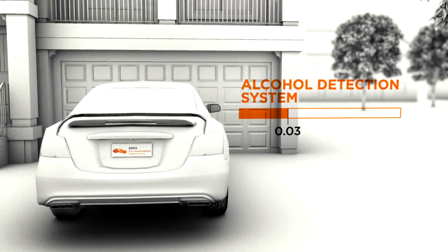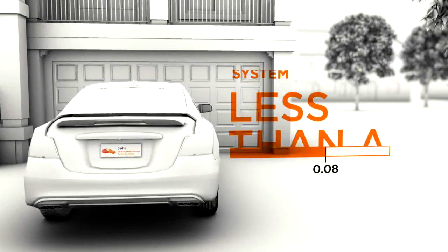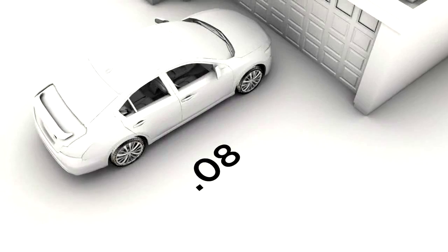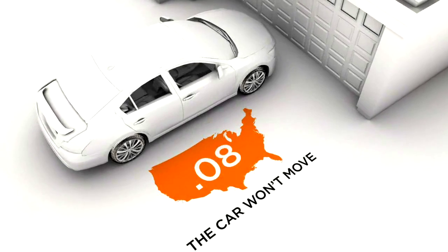The alcohol detection system will measure the alcohol in a driver's blood in less than a second. If it is above .08, the legal limit in all 50 states, the vehicle won't move.